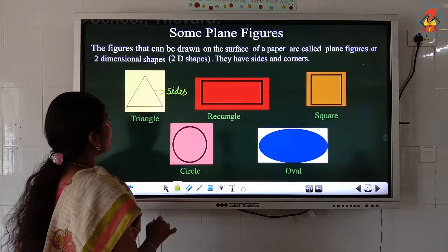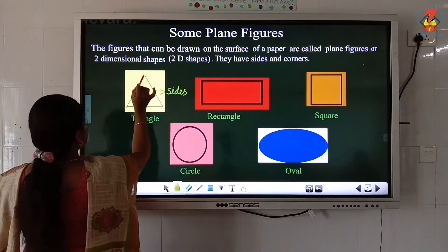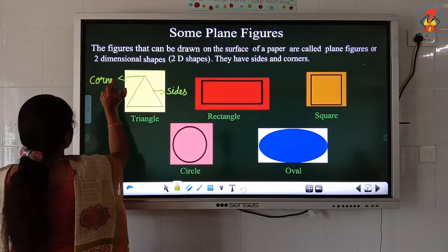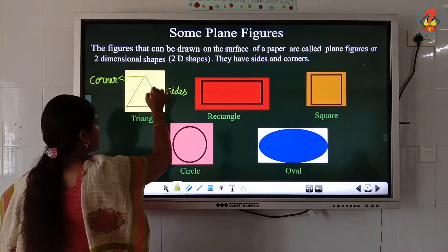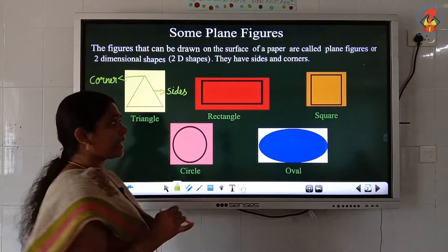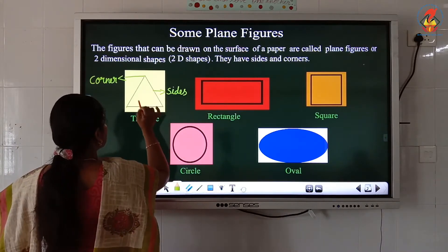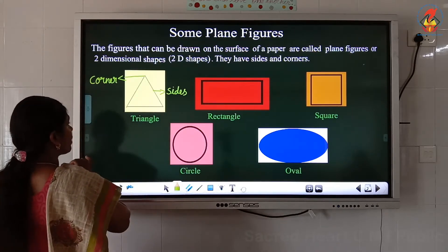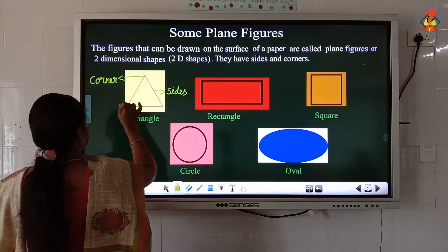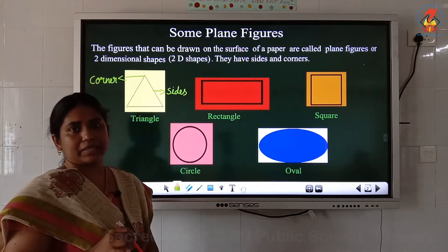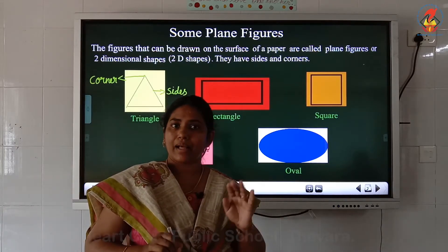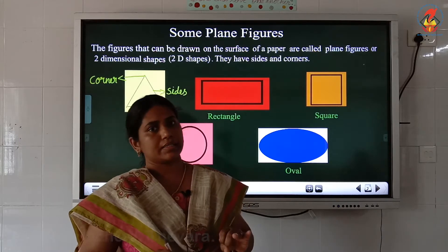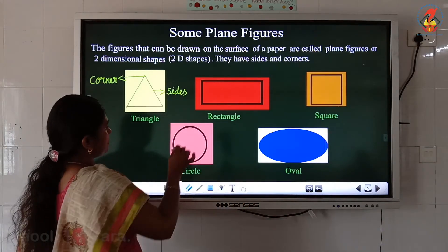This point is called a corner. A triangle has one, two, three corners as well. So once again, a triangle has three sides and three corners.